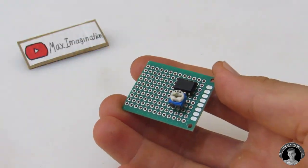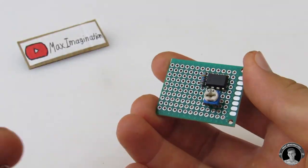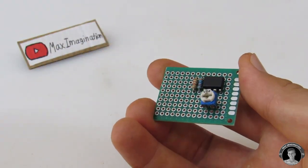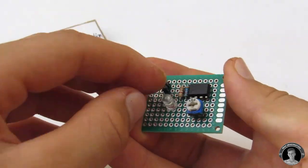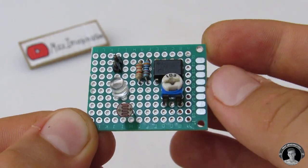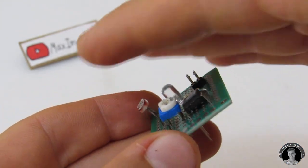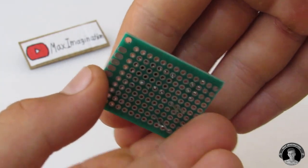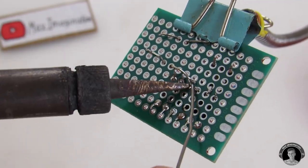The first thing you're going to want to do is take all the components and stick them into the blank PCB like so. Now you're going to solder all of the components in place.